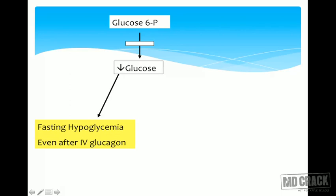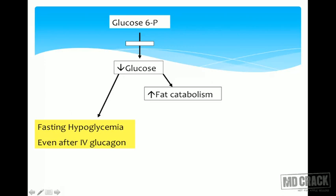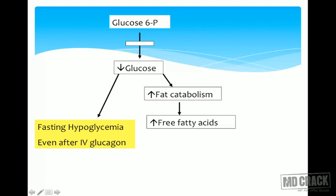The hypoglycemia persists even after IV glucagon administration because glucose-6-phosphate cannot be converted to glucose. The body compensates by increasing fat catabolism — mobilizing fatty acids from adipose tissue — leading to elevated free fatty acids and hyperlipidemia.